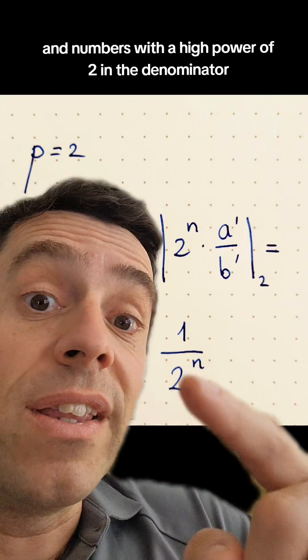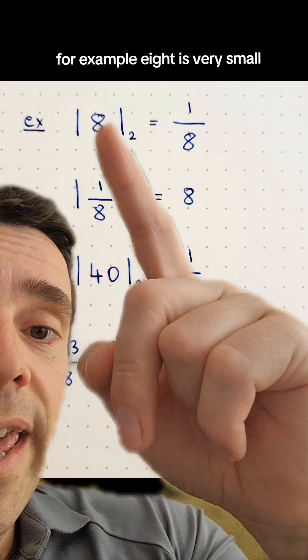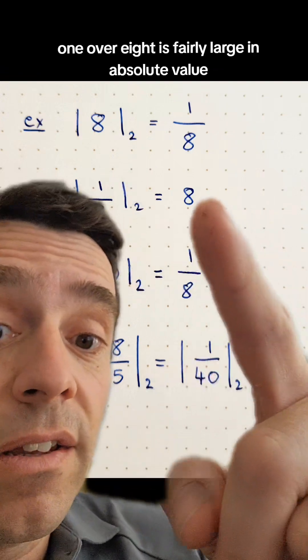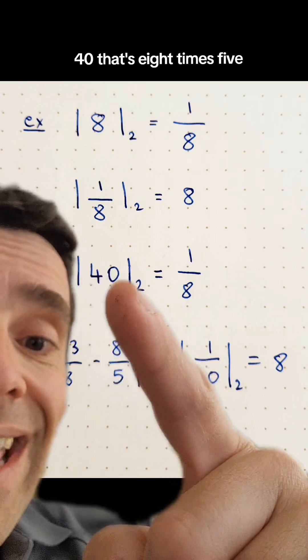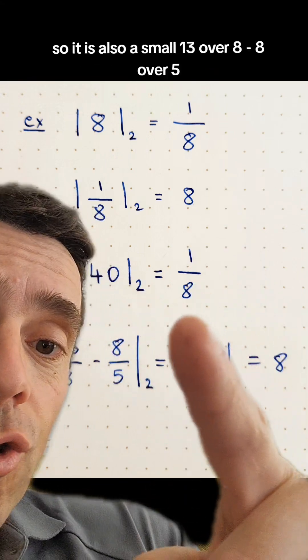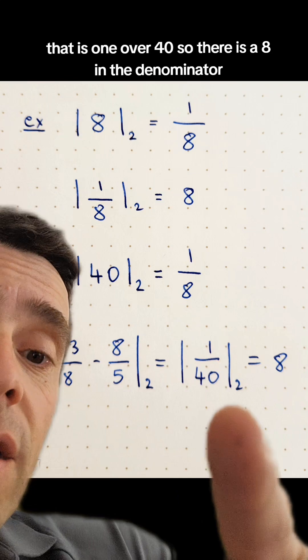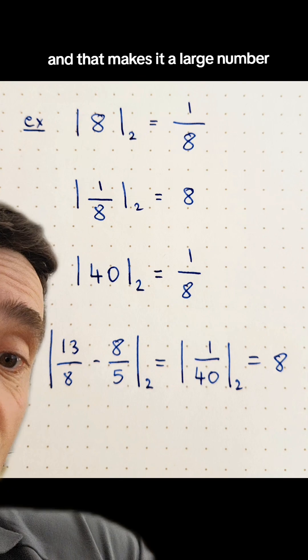For example, 8 is very small in the 2-adic absolute value. 1 over 8 is fairly large in absolute value. 40, that's 8 times 5, so it is also small. 13 over 8 minus 8 over 5, that is 1 over 40. So there is an 8 in the denominator, and that makes it a large number.